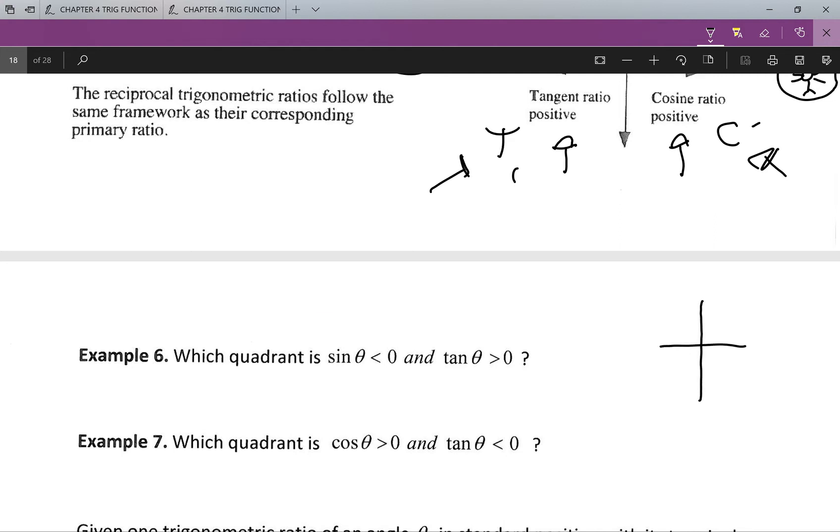So I go C, A, S, T, or the CAST rule. And we want to look, sine is negative, so sine has to be negative. That means we're in either quadrant three or four. And tan is positive, so that tells me I'm either going to be in quadrant one or four.